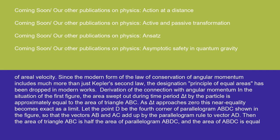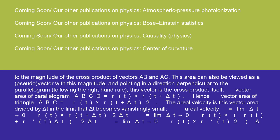Let the point D be the fourth corner of parallelogram ABDC shown in the figure, so that the vectors AB and AC add up by the parallelogram rule to vector AD. Then the area of triangle ABC is half the area of parallelogram ABDC, and the area of ABDC is equal to the magnitude of the cross product of vectors AB and AC.